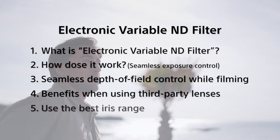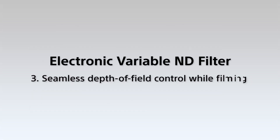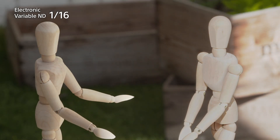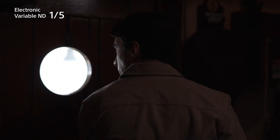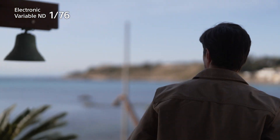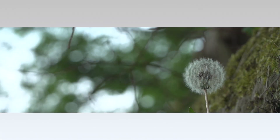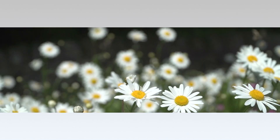This introductory video explains the unique features of Sony's electronic variable ND filter. One of the best features is that the camera can adjust the exposure seamlessly and maintain the same aperture setting, thanks to Auto ND mode. Alternatively, you can use Auto ND to seamlessly control the depth of field within one shot.